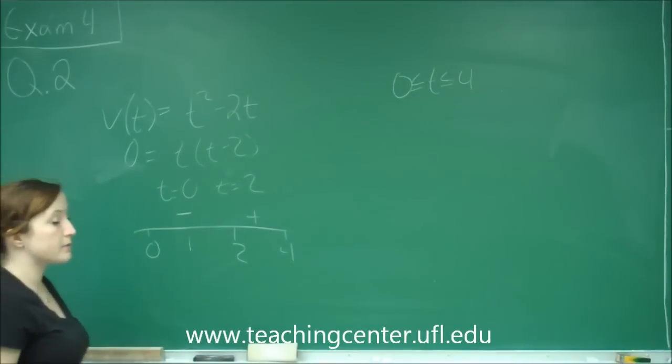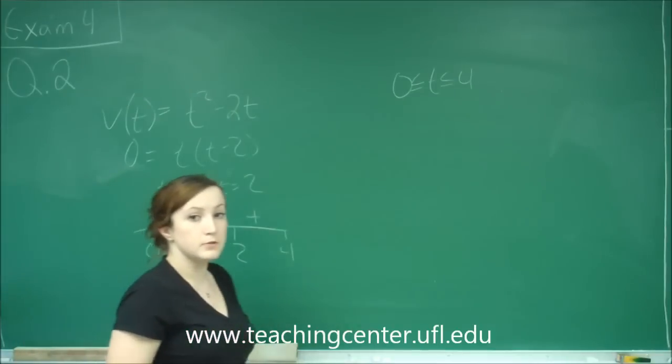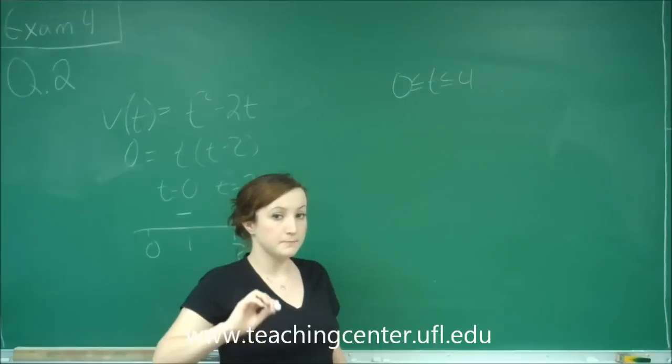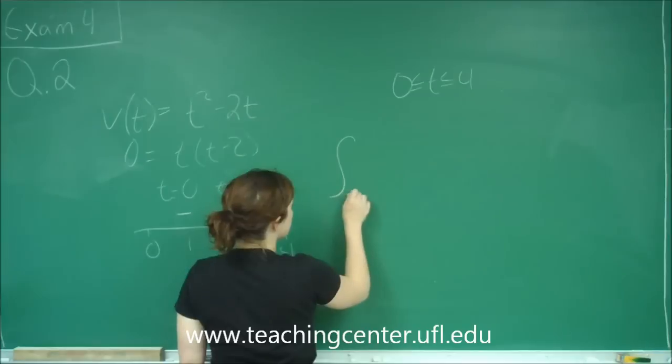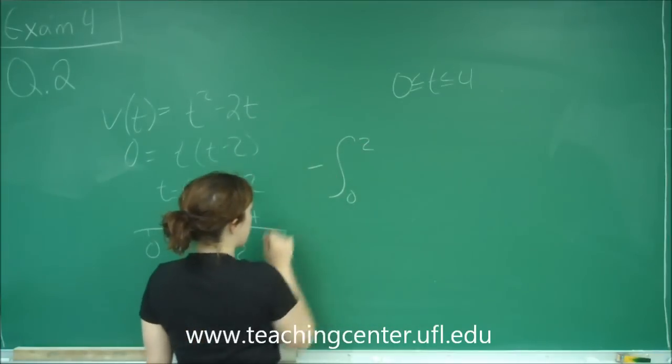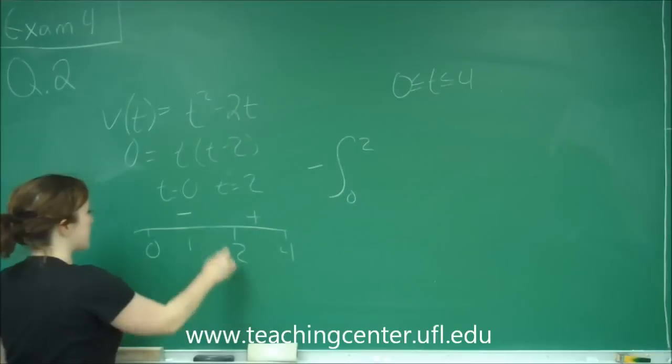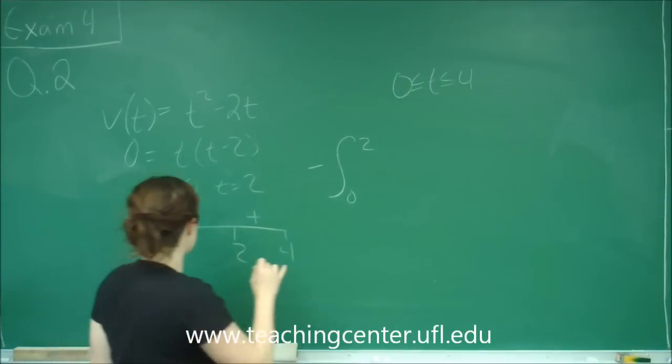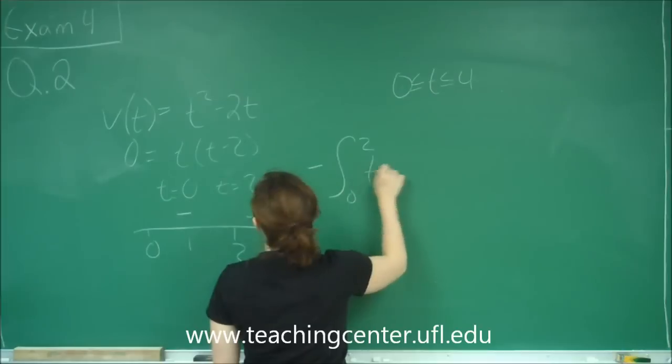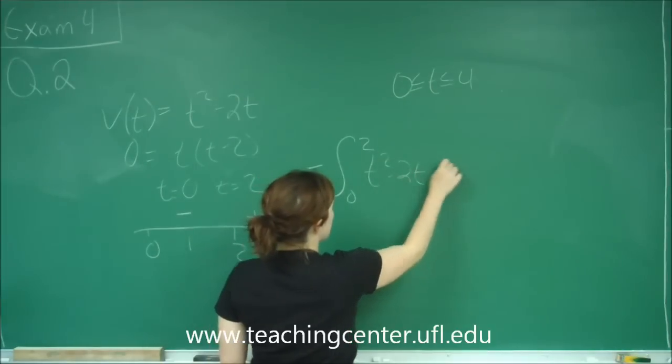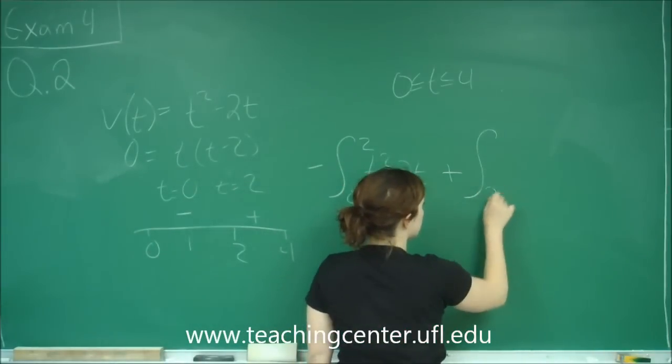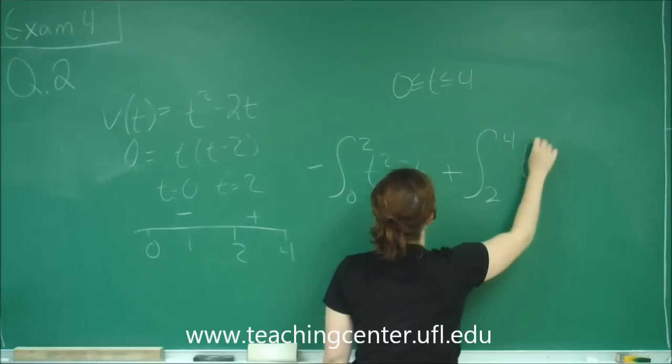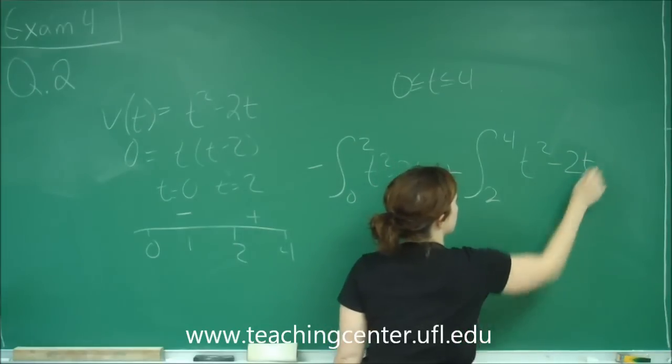So when I'm trying to find the total distance, I'm going to use my integrals. But I need to make sure that from 0 to 2, I'm going to multiply by a negative, because I want that distance. I'm actually going to find the positive distance. So that's going to be of t squared minus 2t, plus the portion from 2 to 4 of t squared minus 2t, because we want the total distance.